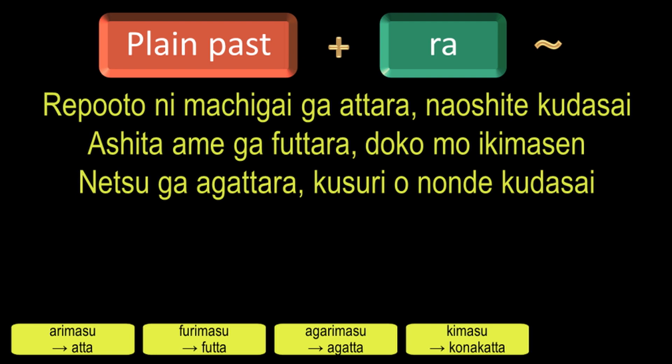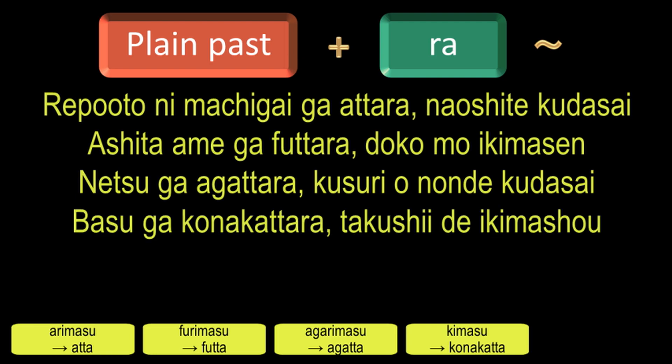And to say 'if the bus doesn't come, let us go by taxi,' in Japanese it will be: Basu ga Konakattara takushii de ikimashou. Here, ikimasu means to go, and the expression ending with Mashou is used when the speaker is positively inviting the listener to do something together.